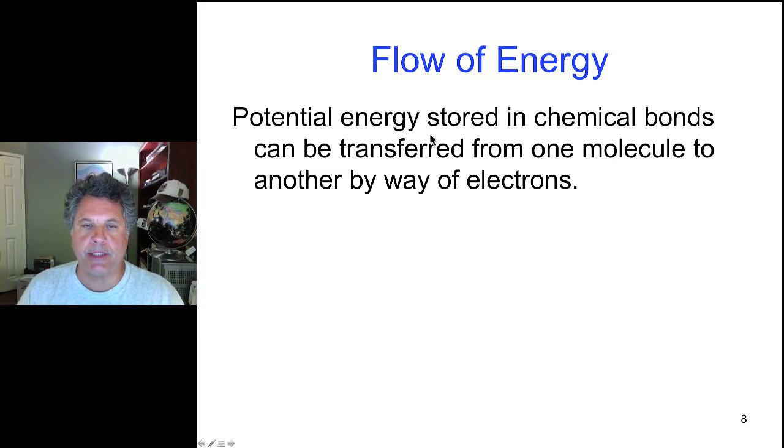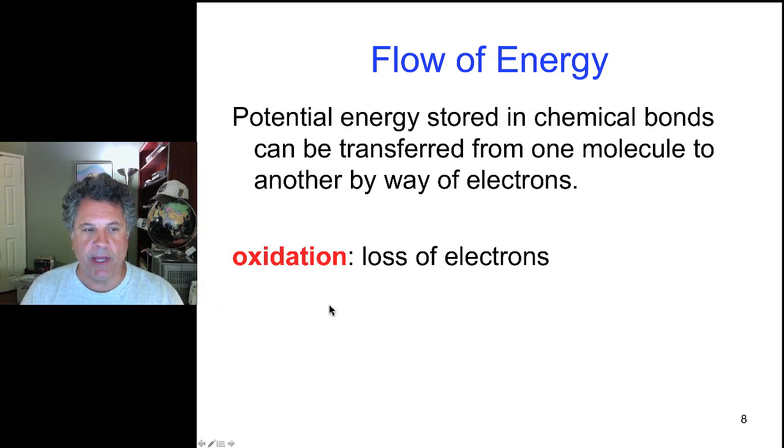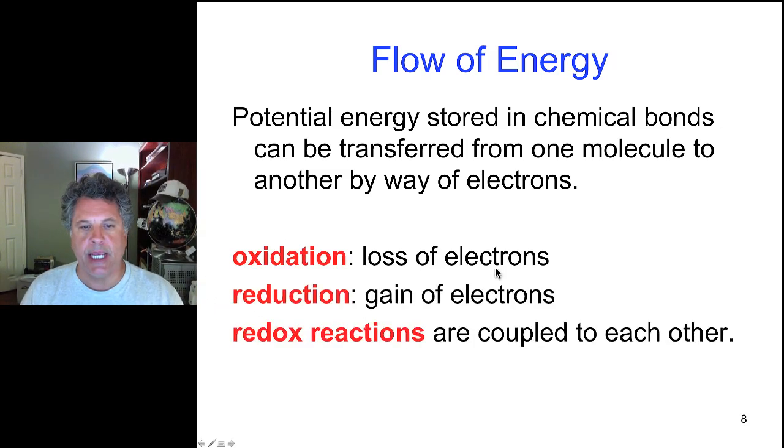If we look at the breaking of chemical bonds, we see that the potential energy stored in chemical bonds can be transferred from one molecule to another by way of electrons. And we've mentioned this before. Oxidation is the loss of electrons, whereas reduction is a gain of electrons. And redox reactions then are coupled to each other—reduction and oxidation. And we will see this again and again as we go through some of the biochemistry of energy flow in biology.